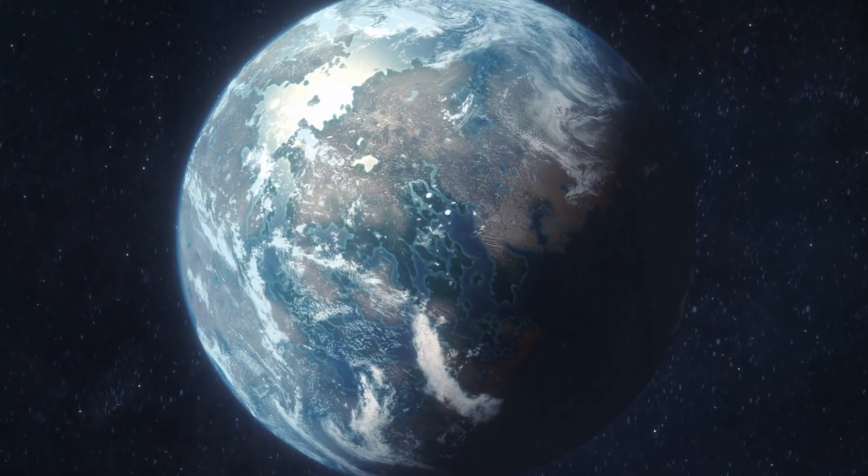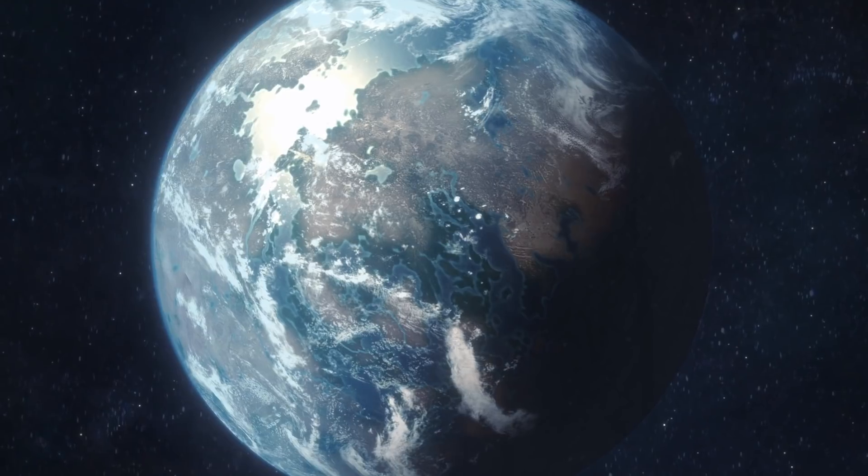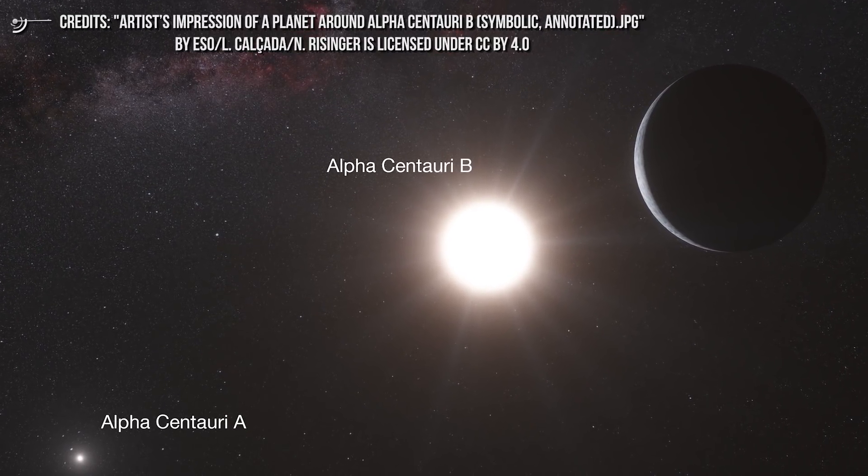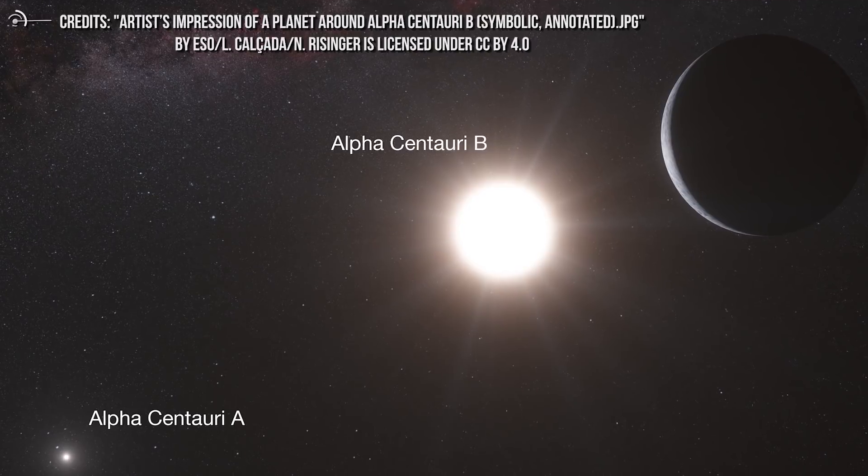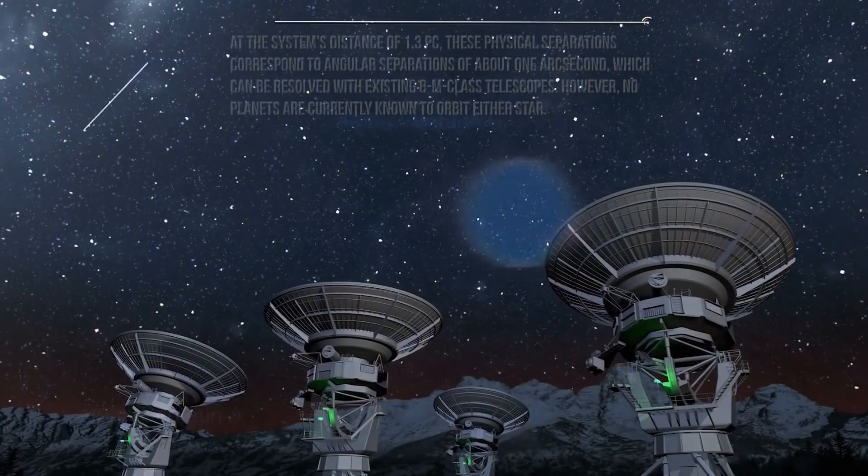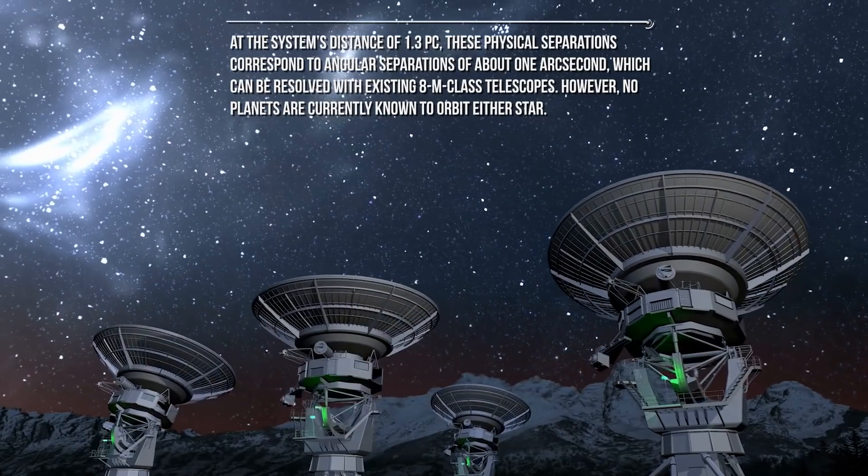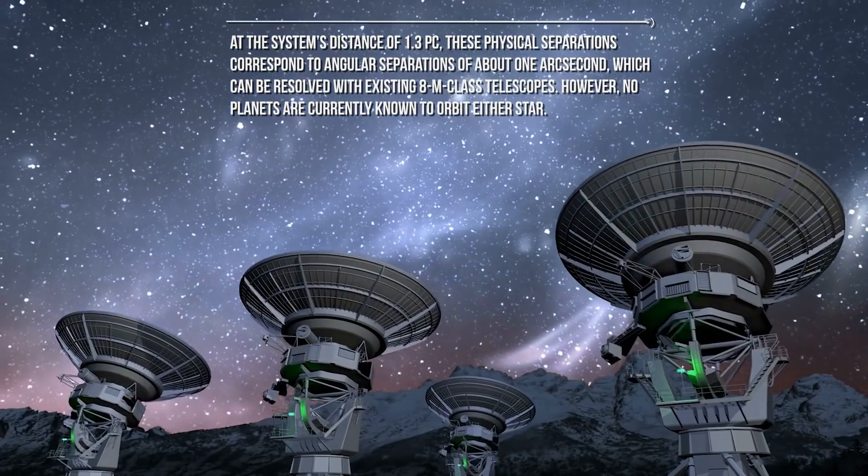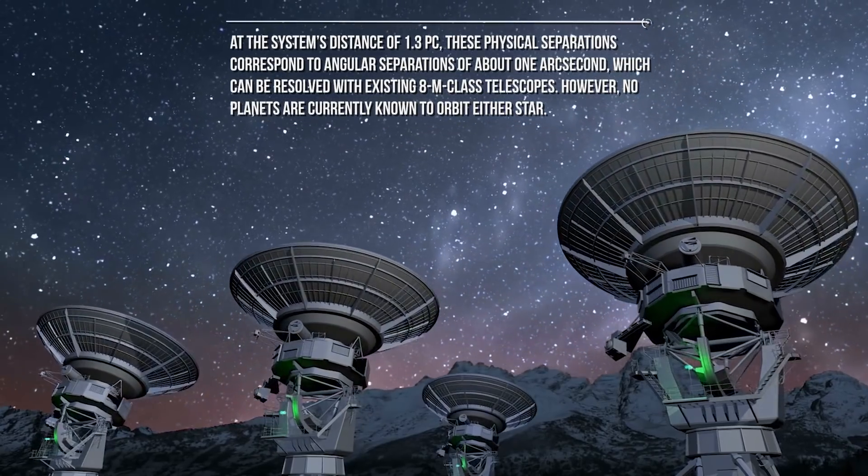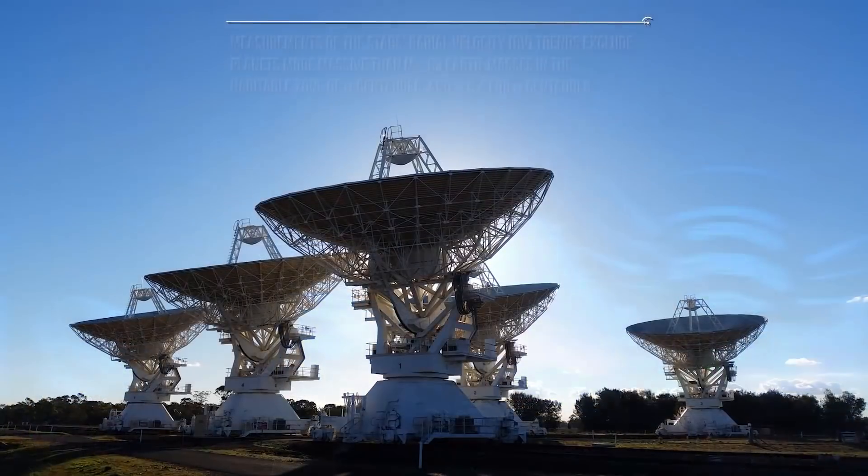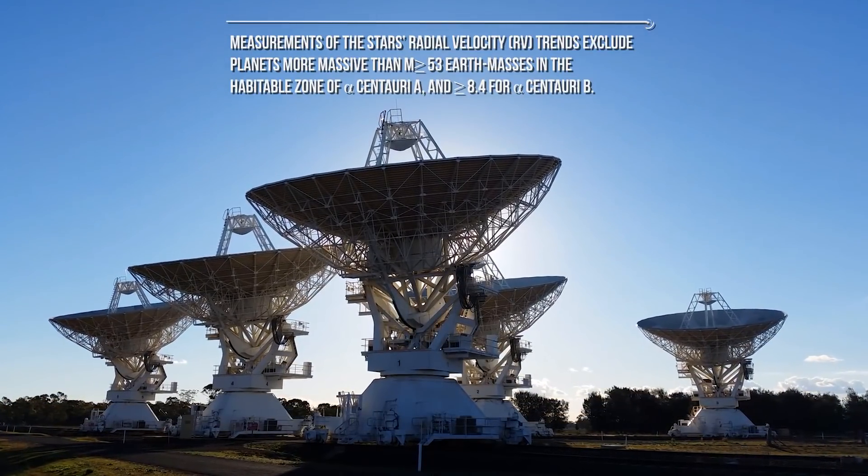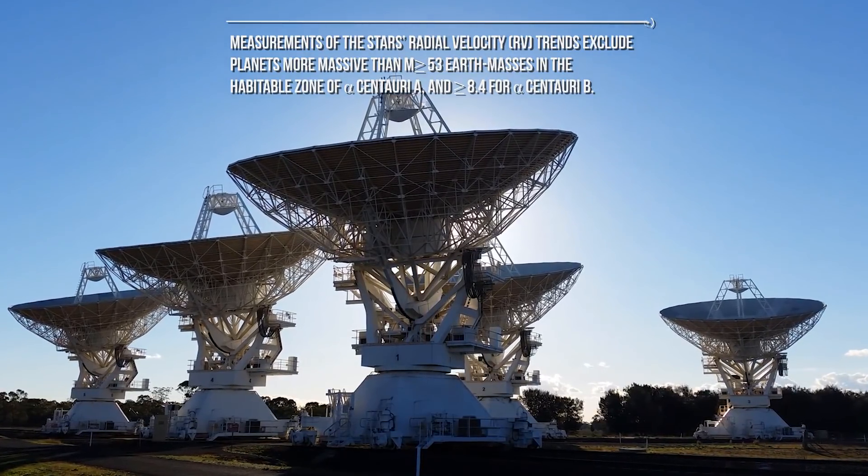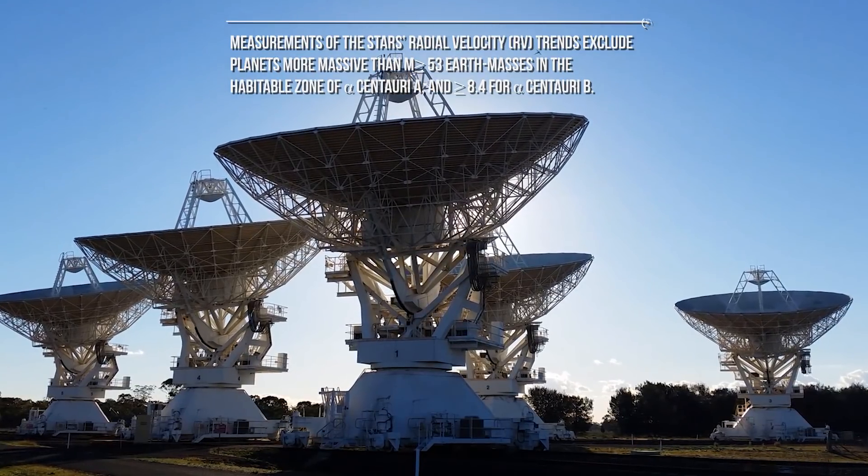The nearest stellar system, Alpha Centauri, is among the best suited for imaging habitable zone exoplanets. The primary components, Alpha Centauri A and B, are similar in mass and temperature to the Sun, and their habitable zones are at separations of about 1 AU. At the system's distance of 1.3 parsec, these physical separations correspond to angular separations of about 1 arc second, which can be resolved with an existing 8-meter class telescope. However, no planets are currently known to orbit either star. Measurements of the star's radial velocity tends to exclude planets more massive than 53 Earth masses in the habitable zone of Alpha Centauri A and more massive than 8.4 Earth masses for Alpha Centauri B.